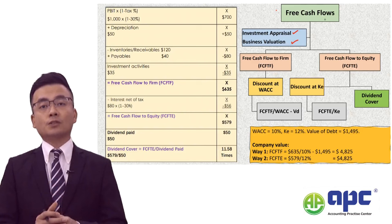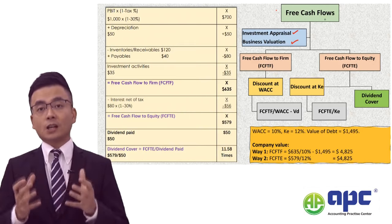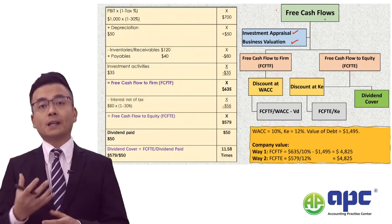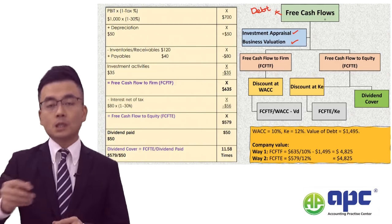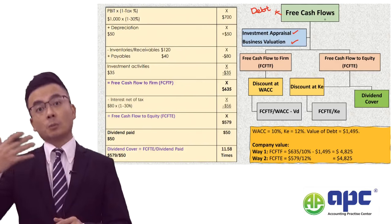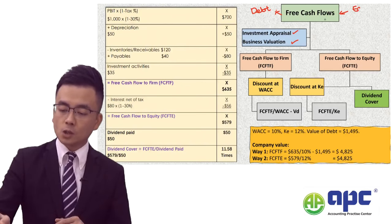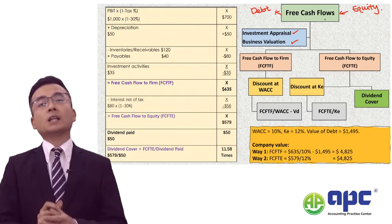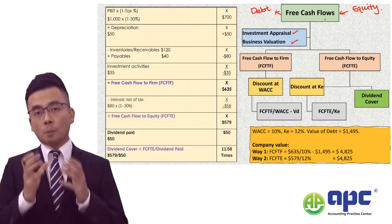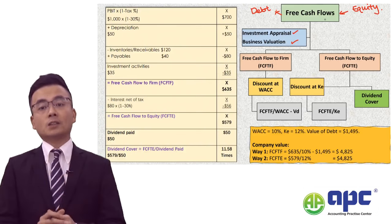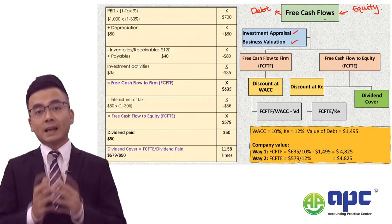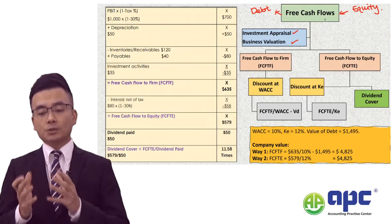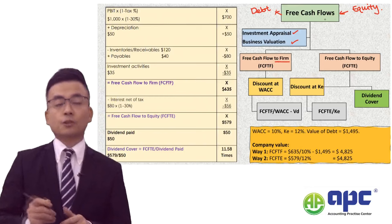Free cash flows are simply the cash flows left within the business. We need to repay this back to either debt holders — who lend us money in the form of interest and principal — or alternatively the shareholders. Fund providers can come from either debt or equity, so money left within the business must be repaid to both debt holders and shareholders.